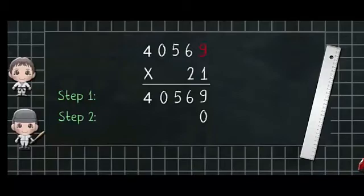So here 9 into 2 is equal to 18. So we will write 8 and 1 carried over in next column. And then we will multiply 6 into 2. 6 into 2 is 12 plus 1 that is 13.